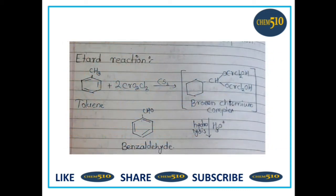Then Etard reaction. Etard reaction is a chemical reaction that involves direct oxidation of an aromatic or heterocyclic bound methyl group to an aldehyde using chromyl chloride. In this example, toluene reacts with chromyl chloride to form a brown chromium complex, and on hydrolysis it forms benzaldehyde. So toluene is converted into benzaldehyde — this is the Etard reaction.